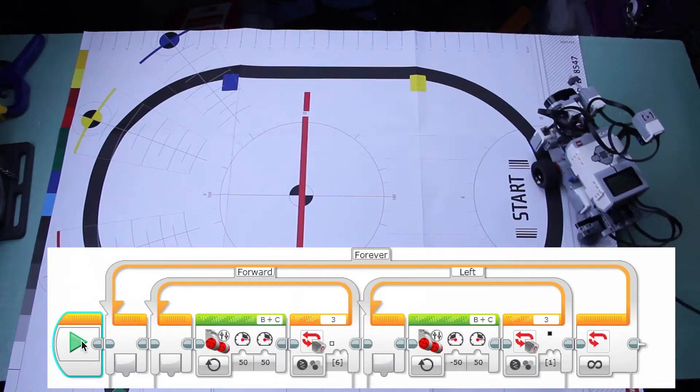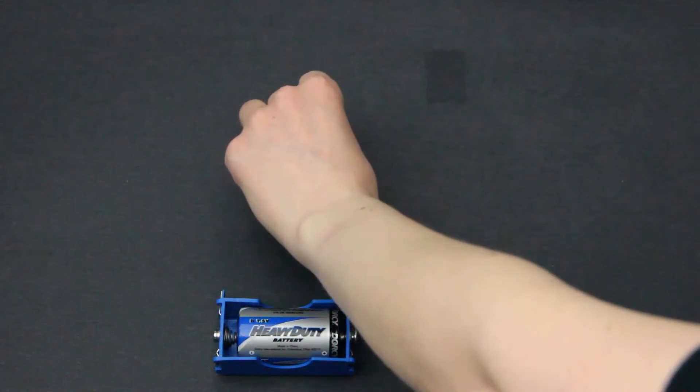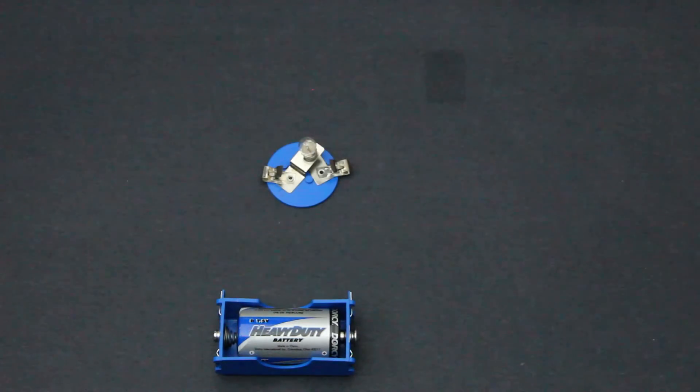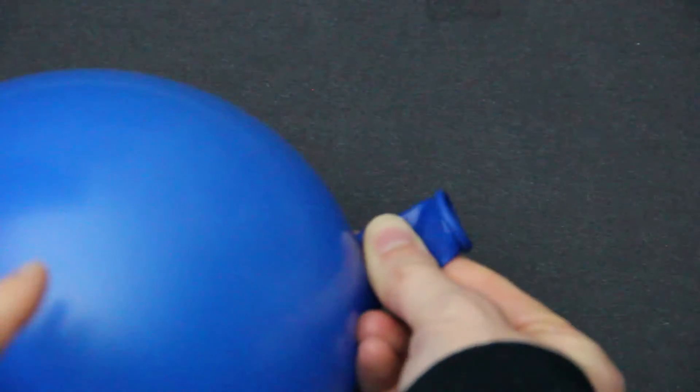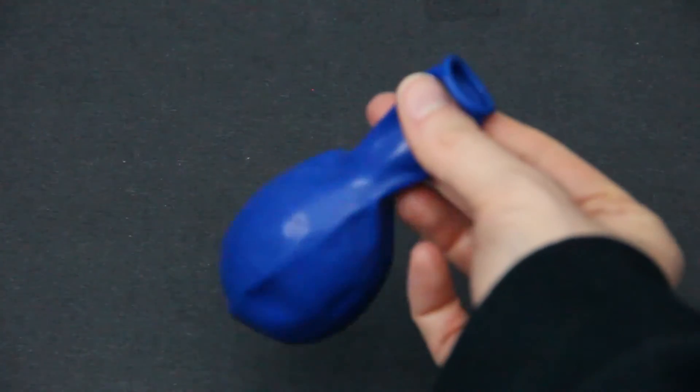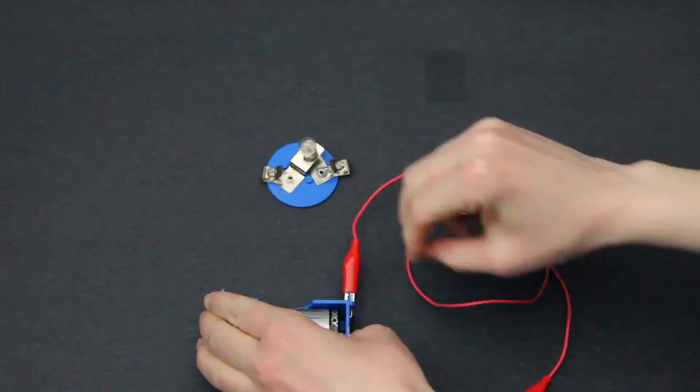we first must understand voltage, resistance, and current. The battery in this light circuit provides voltage. Voltage is how much push or the potential difference that the circuit has. Think of a balloon releasing air. It's trying to balance the air pressure.